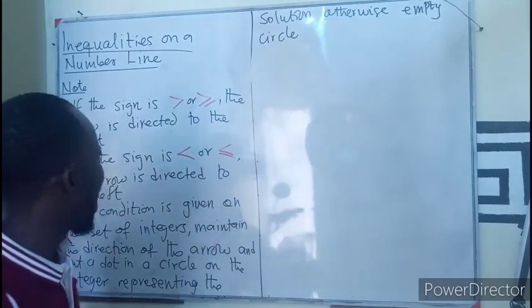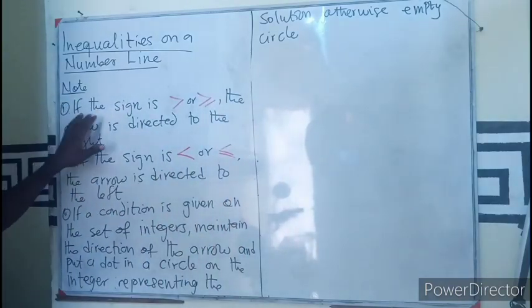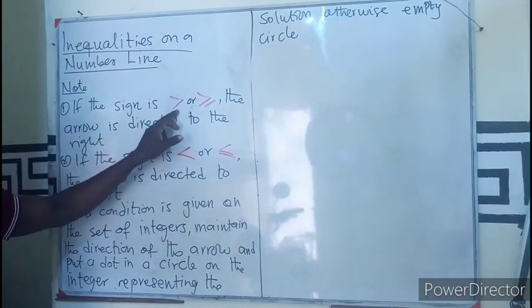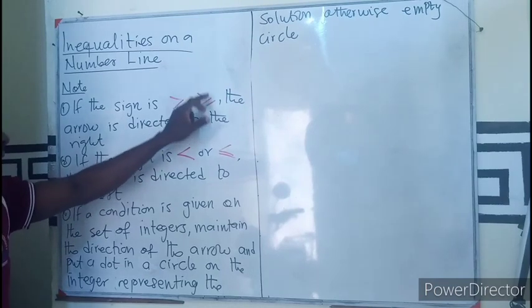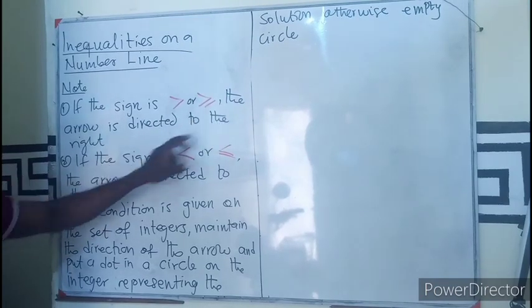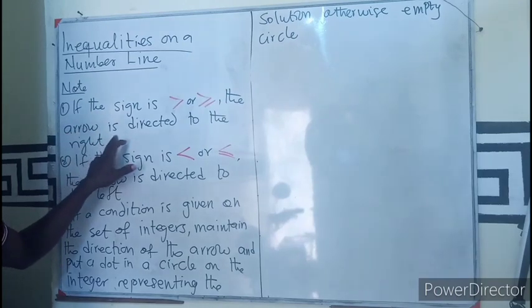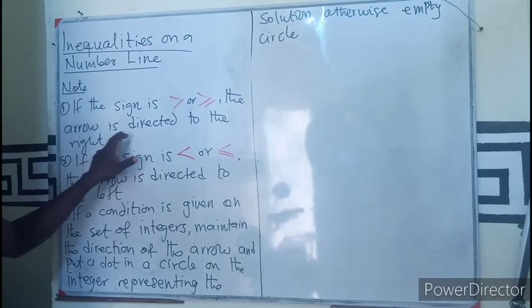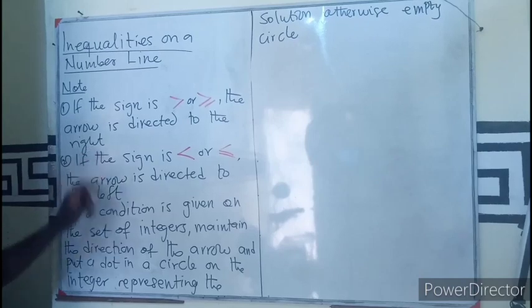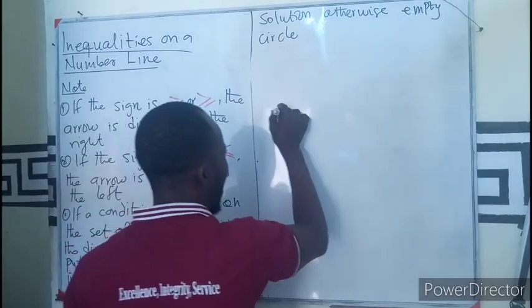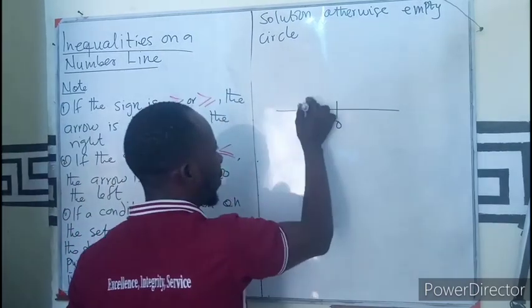So if you have the sign, if the sign is greater than or greater than or equals to, then the arrow you are going to place on the number is going to be directed towards the right. As in, if I have a number line, I have zero,